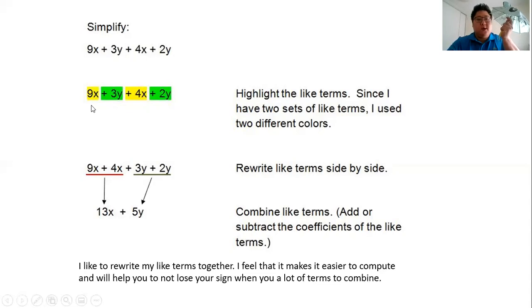We're going to start by finding the like terms. That's an x and that's an x, that's a y and that's a y. We highlight the 9x yellow, we yellow the plus 4x, and then with the green, the plus 3y and plus 2y is green. We highlight the like terms just to make it easier. If you don't have a highlighter, we can always get a pen and circle them or box them.